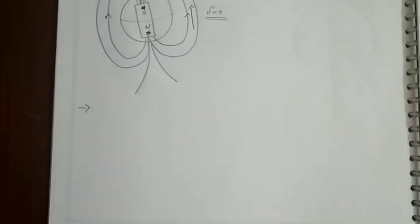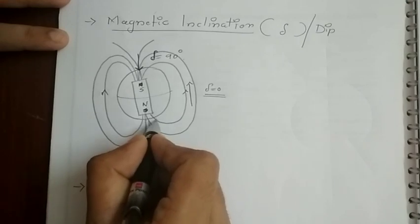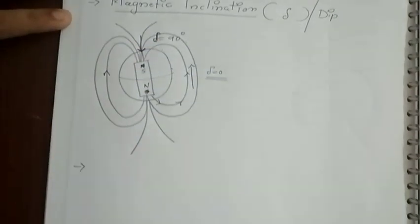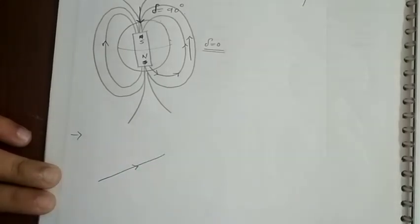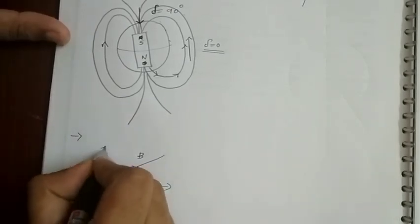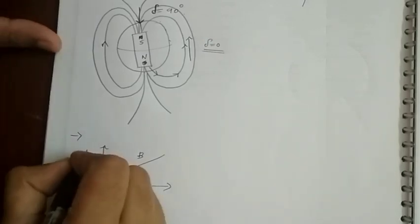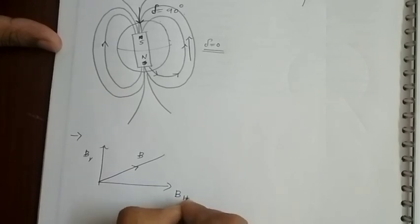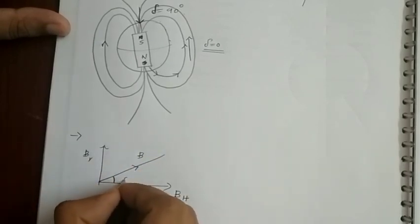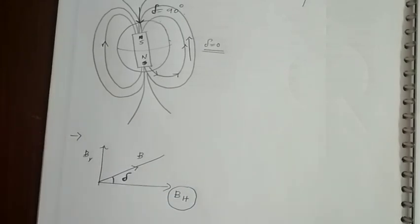The third element is the horizontal component of earth's magnetic field. At any point on the earth's surface, the direction of the magnetic field is continuously changing. The resultant magnetic field B at any point can be split into two components: the horizontal component BH and the vertical component BV. The angle that the horizontal component makes with the resultant magnetic field of the earth is known as the magnetic inclination delta.